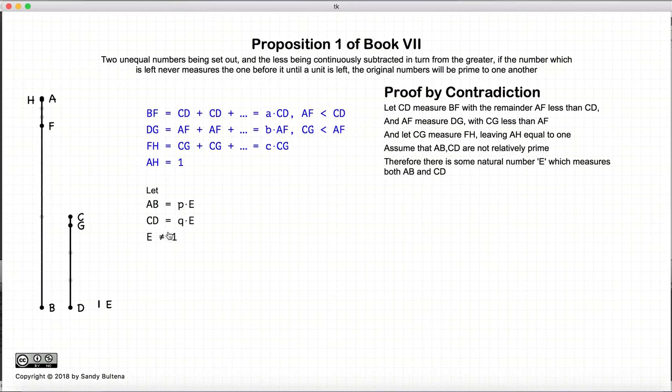And we're going to do this by assuming that it's not prime. So if it's not prime, then AB is equal to some multiple of E, CD is also equal to some multiple of E, and E is not equal to 1. All right. Remember, this is the definition of it being not prime to one another.